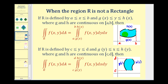If the region is bounded above and below by a function of x, then we'll have to integrate with respect to y first, where the limits of integration with respect to y will be g(x) to h(x). And if our region is bounded to the left and right by functions of y, we'll first integrate with respect to x, and the limits of integration will be g(y) and h(y).